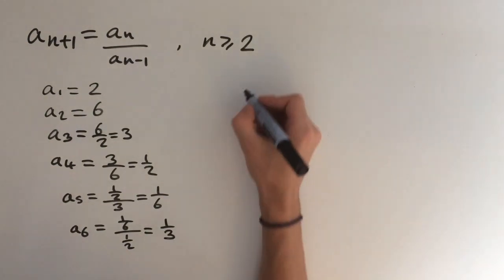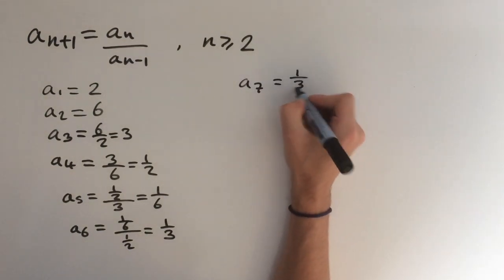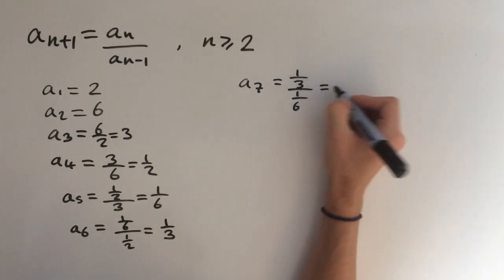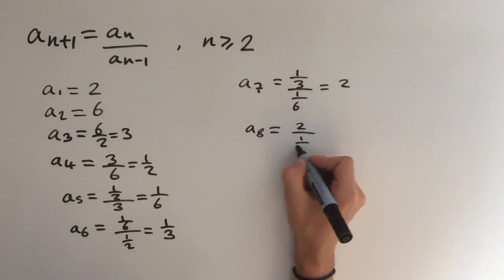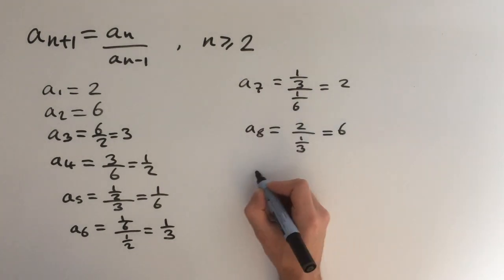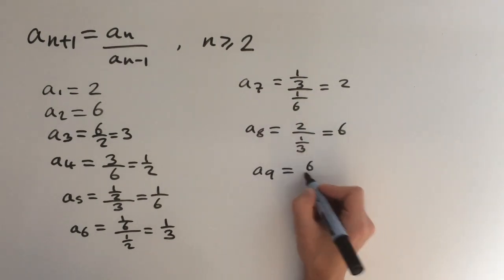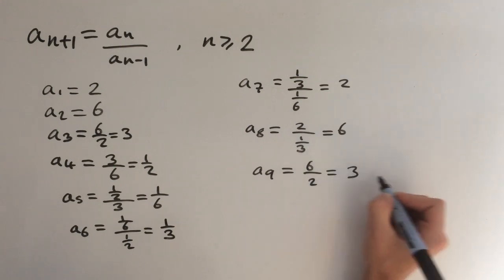Let's do a few more. a_7 equals 1 third over 1 sixth, and this equals 2. a_8 equals 2 over 1 third, this equals 6. a_9 equals 6 over 2, and this equals 3.